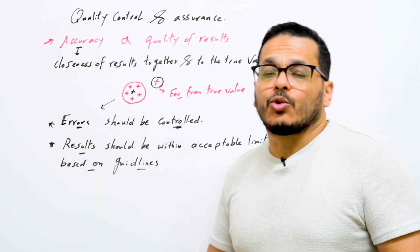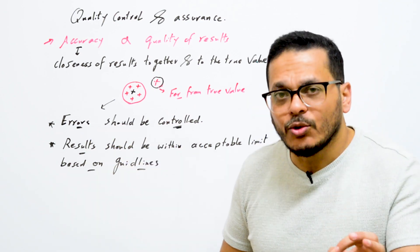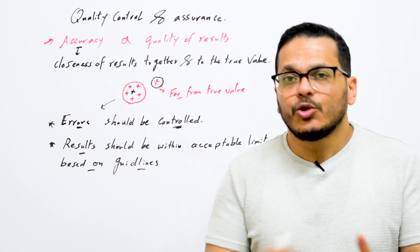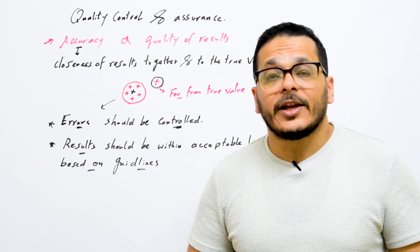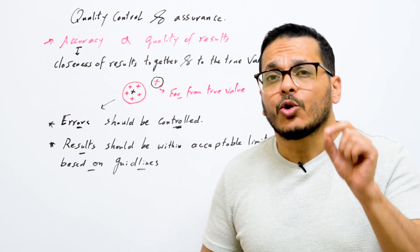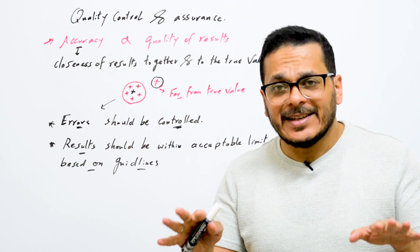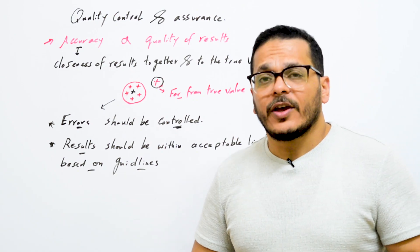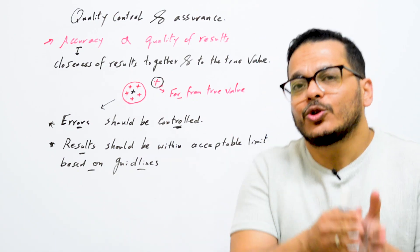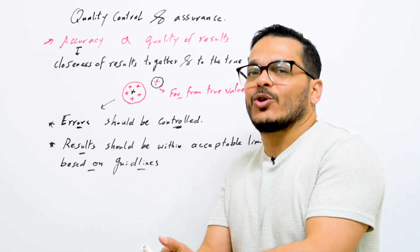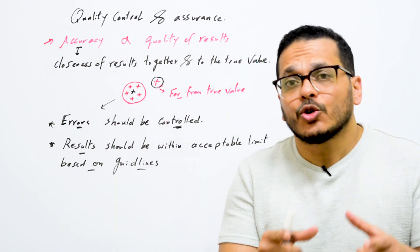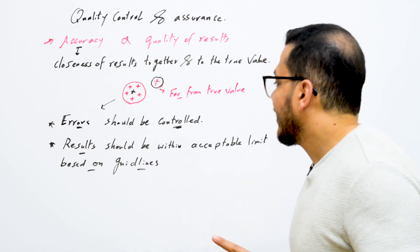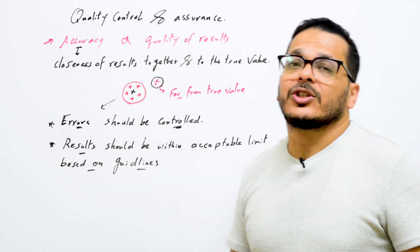Errors should be controlled to get high accuracy. You cannot remove all errors, but errors should be controlled because for any analysis there will be a percentage of error. However, these errors should not affect the accuracy of results — all results should be within the acceptable range according to the guideline used.